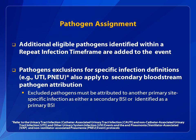The final topic is the assignment of pathogens when reporting infections to NHSN. If additional pathogens are identified within an RIT and found to be associated with the event, those pathogens are added and a new infection is not reported. In 2015, for some infection types, there are pathogen exclusions. For example, certain designated organisms are not available for meeting the infection criteria for UTI and pneumonia definitions. Pathogens excluded from specific infection definitions also cannot be assigned as secondary BSI pathogens for those types of infections. Excluded pathogens must be attributed to either a secondary BSI for another site-specific infection or a primary BSI. For more details, refer to the UTI and pneumonia hot topic presentations.